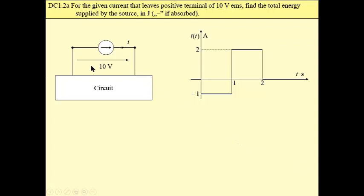We have a DC source, a 10-volt source, and a switched circuit, such that the current leaving the positive terminal of this voltage source is at first negative, then positive, and then zero. Our task is to find the total energy which is supplied or absorbed by this source, so we have to find the instantaneous power.